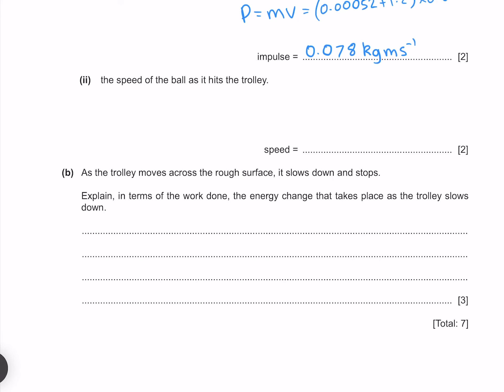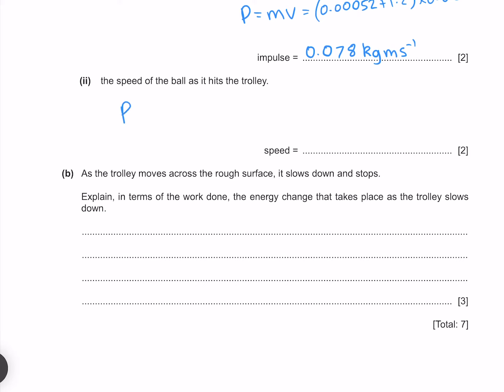Calculate the speed of the ball as it hits the trolley. We know the momentum of the ball must equal the final momentum of the trolley-ball system, which is 0.078 kg·m/s. This also equals the mass of the ball multiplied by its velocity. Solving for velocity by dividing both sides by mass — 0.078 divided by 0.00052 — gives me 150 m/s.